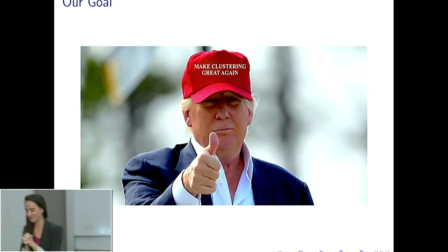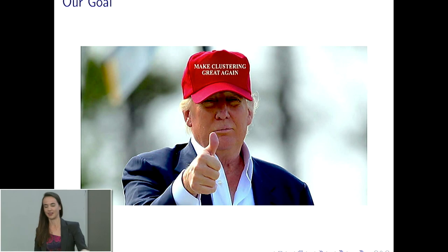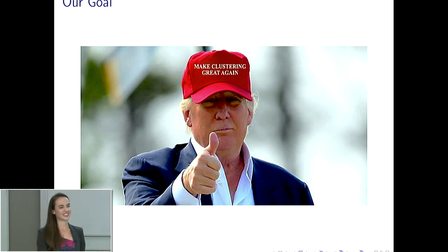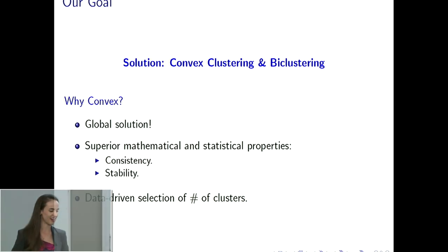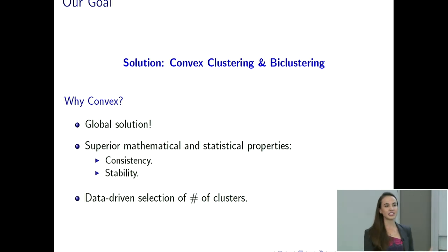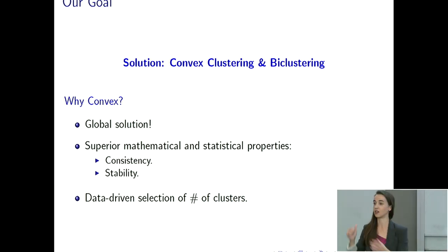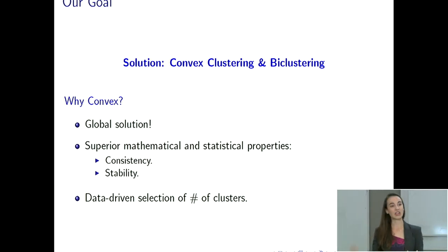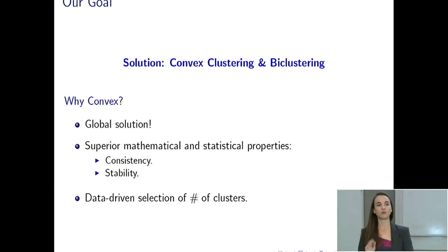So our goal here is to make clustering great again. The solution is to propose convex clustering and bi-clustering methods. Why convex? Convex is a really nice mathematical property that means all local solutions are global solutions. This gives us very important mathematical properties in terms of stability and consistency of our results, meaning we can find more reproducible clusters and also have very data-driven ways to select the number of clusters. There are a lot of really good mathematical properties from formulating this as a convex problem.